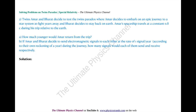Problem 2: Twins Amar and Bharat decide to test the twins paradox. Amar embarks on an epic journey to a star system 20 light years away while Bharat stays back on earth. Amar's spaceship travels at a constant 0.8c during the trip. How much younger would Amar return, and if they decide to send electromagnetic signals to each other at the rate of one signal per year according to their own reckoning, how many signals would each send and receive?